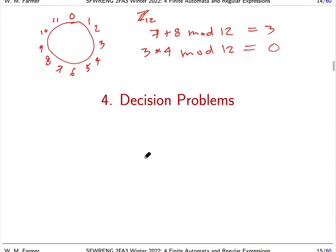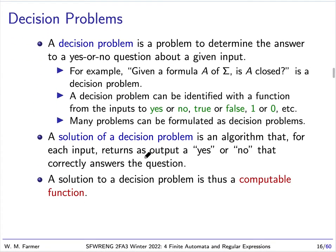Now we're going to talk about decision problems. A decision problem is quite simply a problem to determine an answer for a given input of yes or no. Here's a simple example: Given a formula A of a signature sigma, is A closed? The answer would be yes or no. We can identify decision problems as a function that maps formulas of sigma to yes or no, but it could just as well be true or false or 1 or 0.